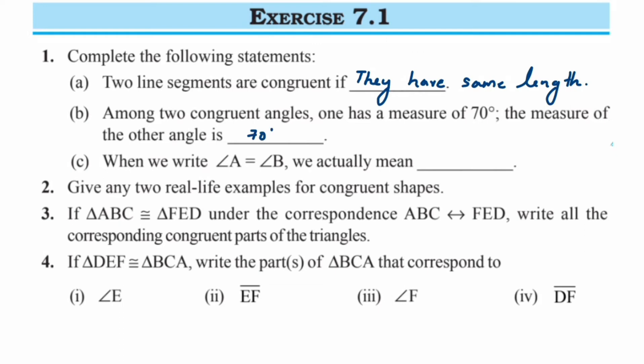The third one: when we write angle A is equal to angle B, we actually mean that the measurements of angle A and B are equal. So we'll write — M stands for the measurement — so M of angle A will be the same as M of angle B. That's it. Let's go to the next question.